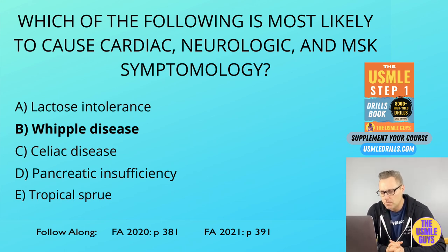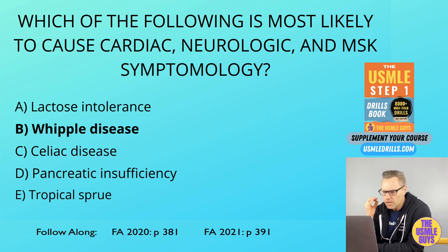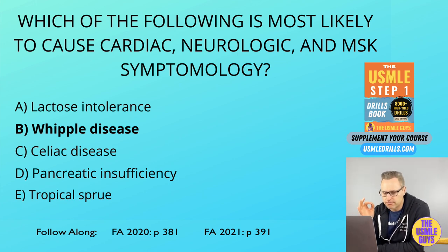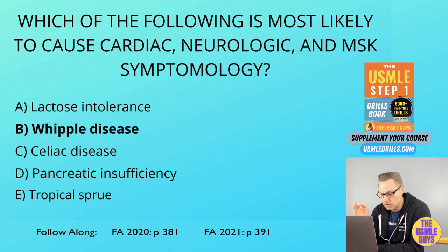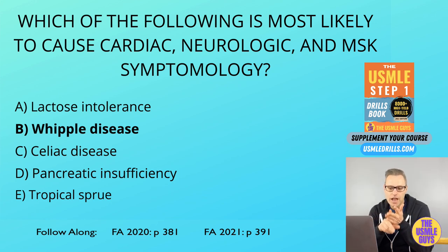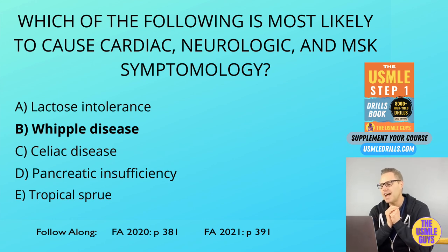Last but not least, celiac disease is an autoimmune-mediated intolerance of gliadin, a protein found in wheat, resulting in malabsorption and steatorrhea. It's associated with haplotypes HLA-DQ2 and HLA-DQ8, and is often associated with dermatitis herpetiformis. Key antibodies include anti-endomysial, anti-deaminated gliadin peptide, and IgA anti-tissue transglutaminase antibody. Patients typically demonstrate atrophy of the villi, hyperplasia of the crypts, and intraepithelial lymphocytosis. This most likely affects the distal duodenum and proximal jejunum, and the D-xylose test helps confirm diagnosis.